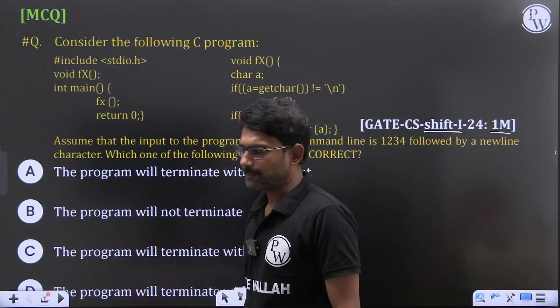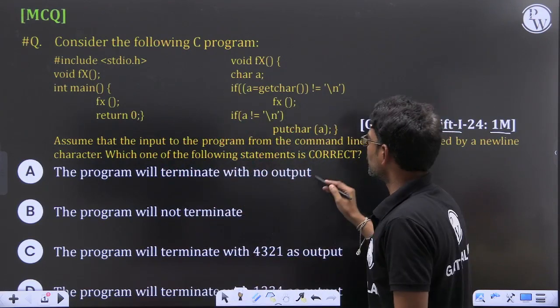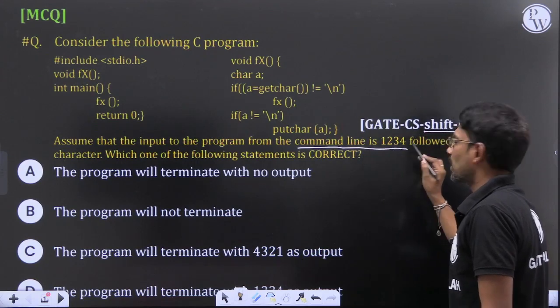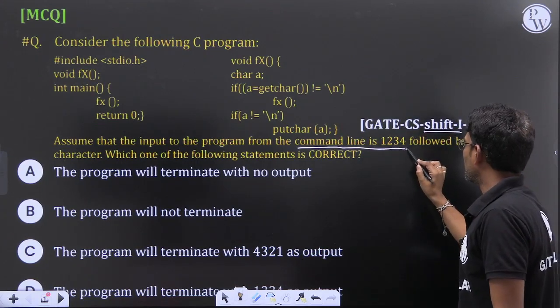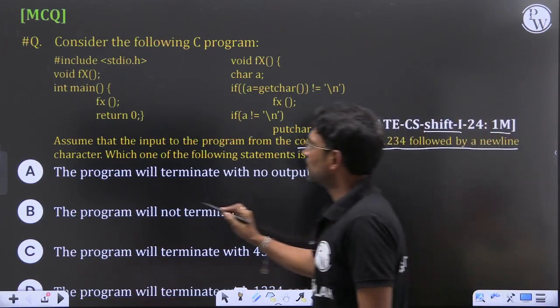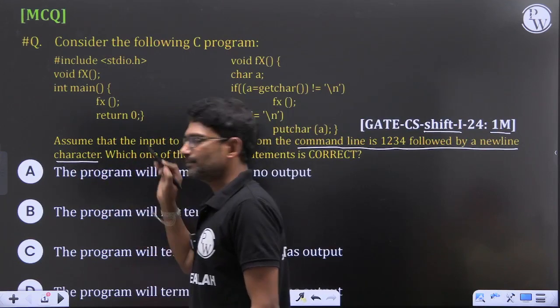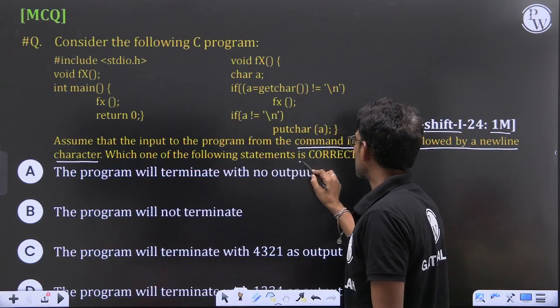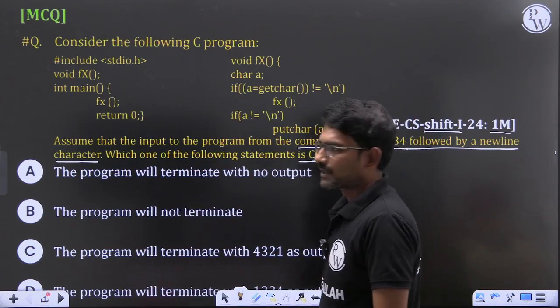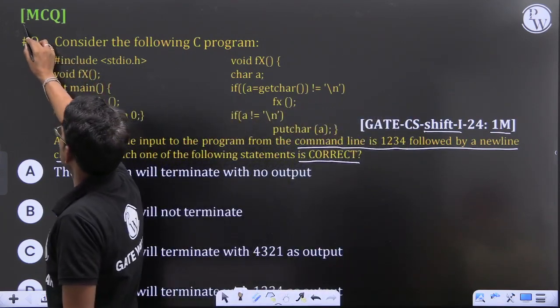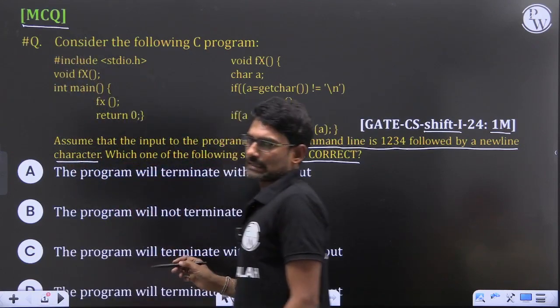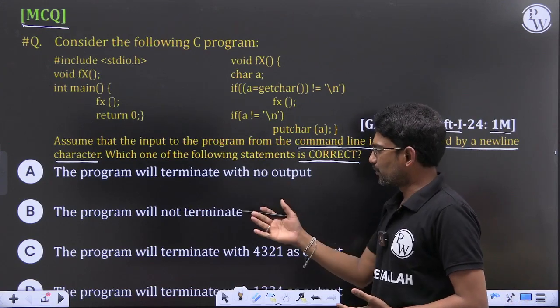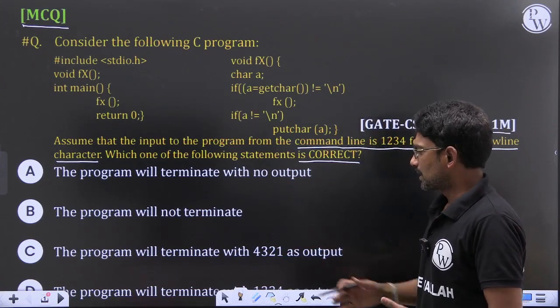Assume that the input to the program from the command line is 1234 followed by a newline character. If so, which one of the following statements is correct? It is a MCQ question, so there will be one answer.